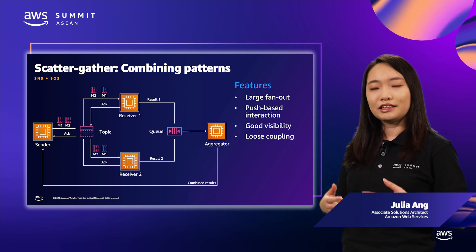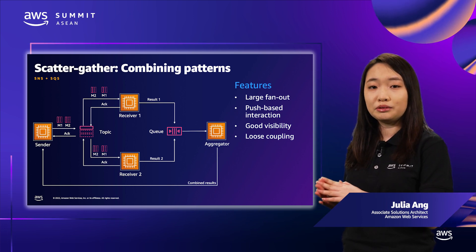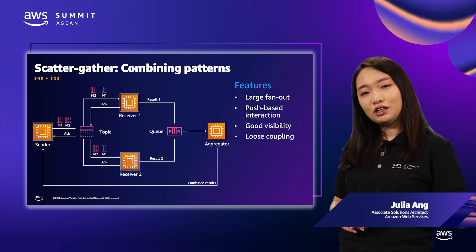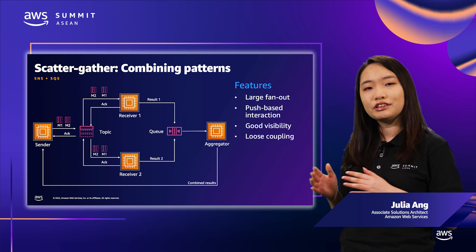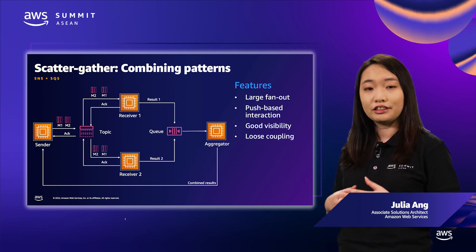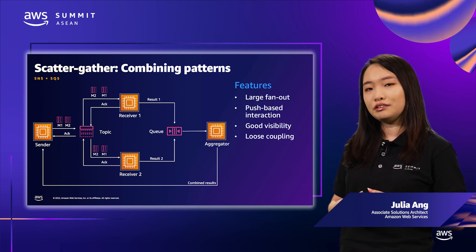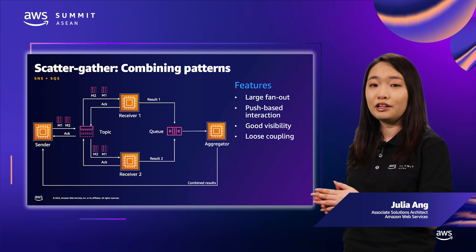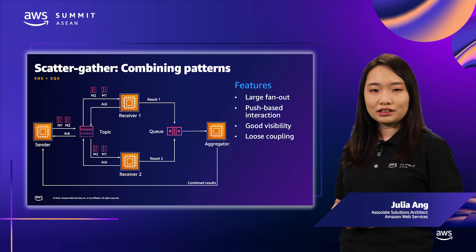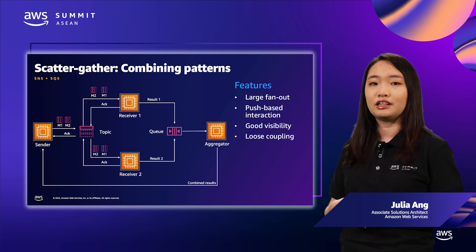One example is the scatter-gather pattern. Consider the use case where you integrate with multiple downstream systems to respond to a customer request — for example, a travel meta-search platform querying various travel partners to return all available options for hotel booking at a given destination. A single search request results in calling multiple partner APIs — a scatter of requests. Once you receive the results, you aggregate or gather them before returning consolidated results to the client.